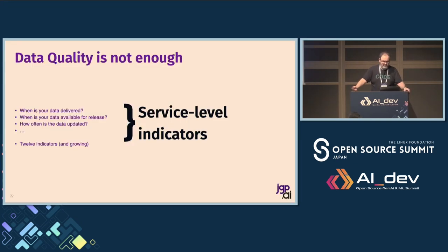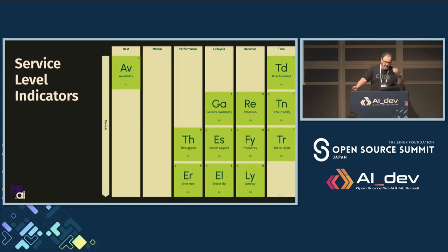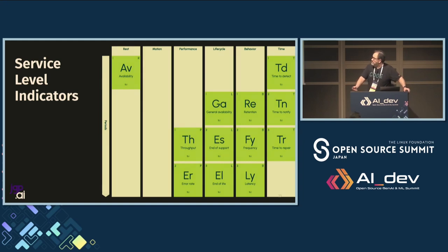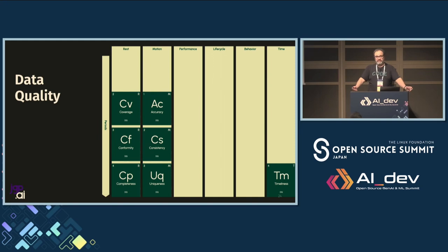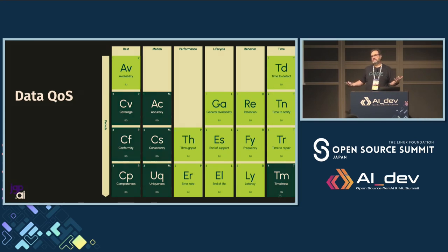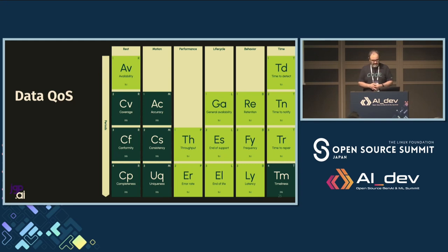When you're thinking about those service level indicators, we've identified about 12 of them. When you combine that with your data quality criteria — there are seven, according to the EDM Council — together we call this data QoS, or data quality of service. Quality of service is a term we use a lot in networking, but why not extend it to data?